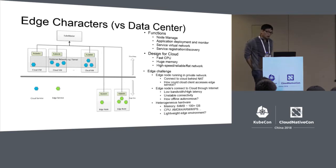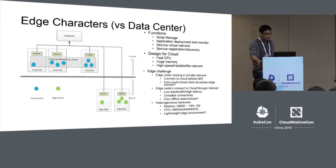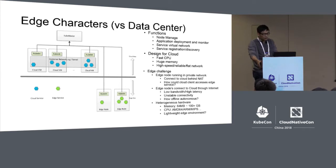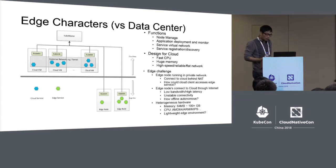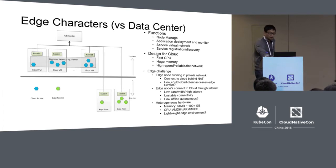The third issue is that in the edge environment there are many, many hardware types — AMD64, ARM, MIPS — and memory ranges from perhaps 64 megabytes to more than 100 GB. To support resource-constrained edge nodes, we need a lightweight edge environment. For example, running a kubelet without any workload takes more than 300 MB of memory, so if our edge node has only 64 MB we cannot run a kubelet directly. We need a lightweight agent.